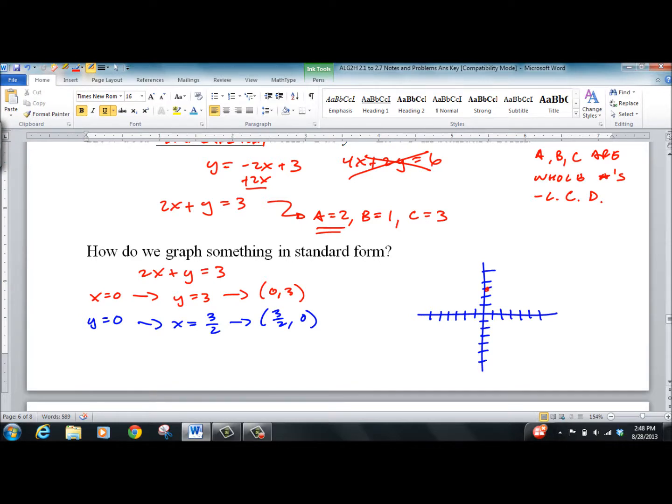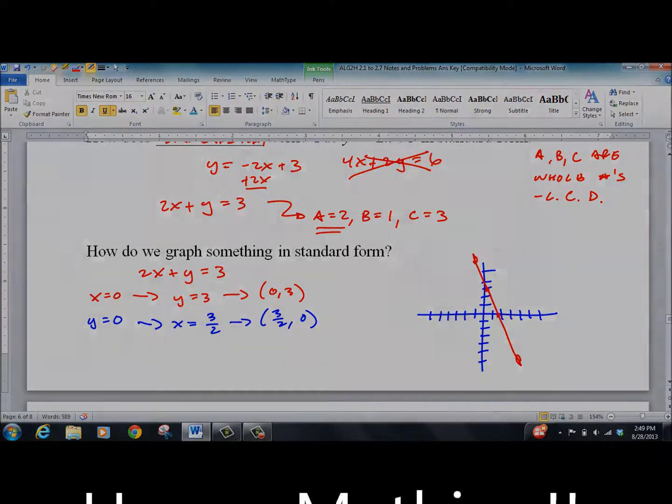Now it's fairly easy to graph. 0, 3 is here. 3 halves, 0 is here. There's our line. Since it's linear, we know it's a straight line. So that's it. That's giving you a lot to work with for standard form. Good luck.